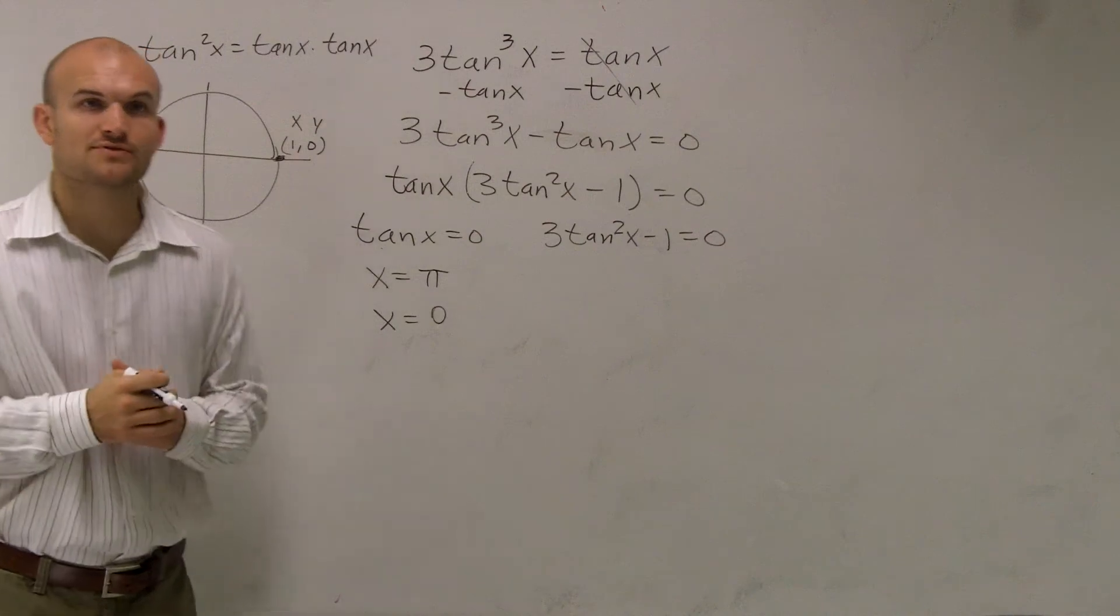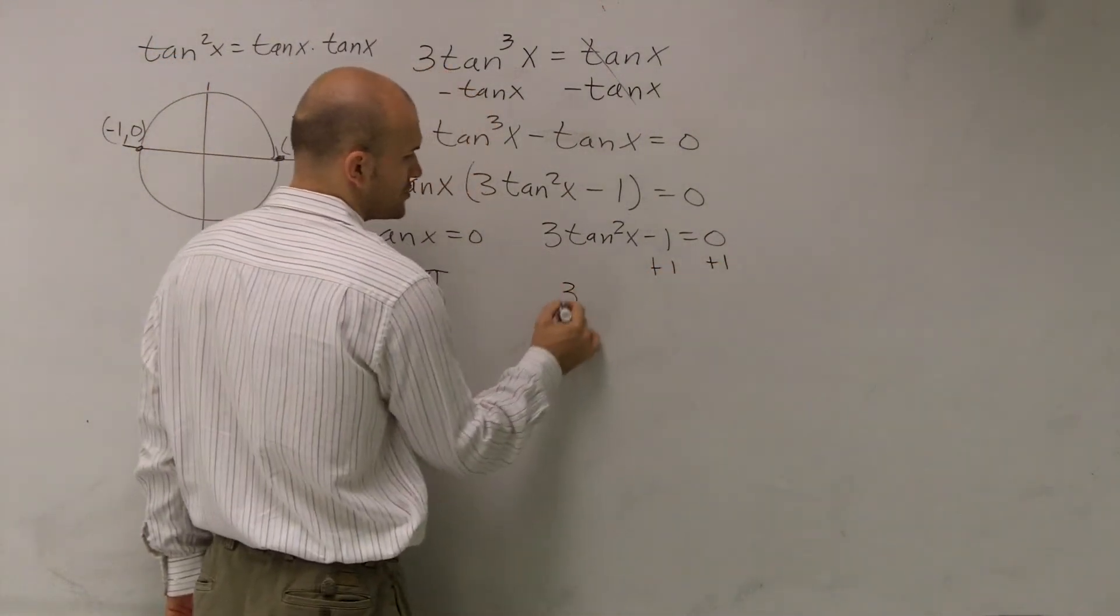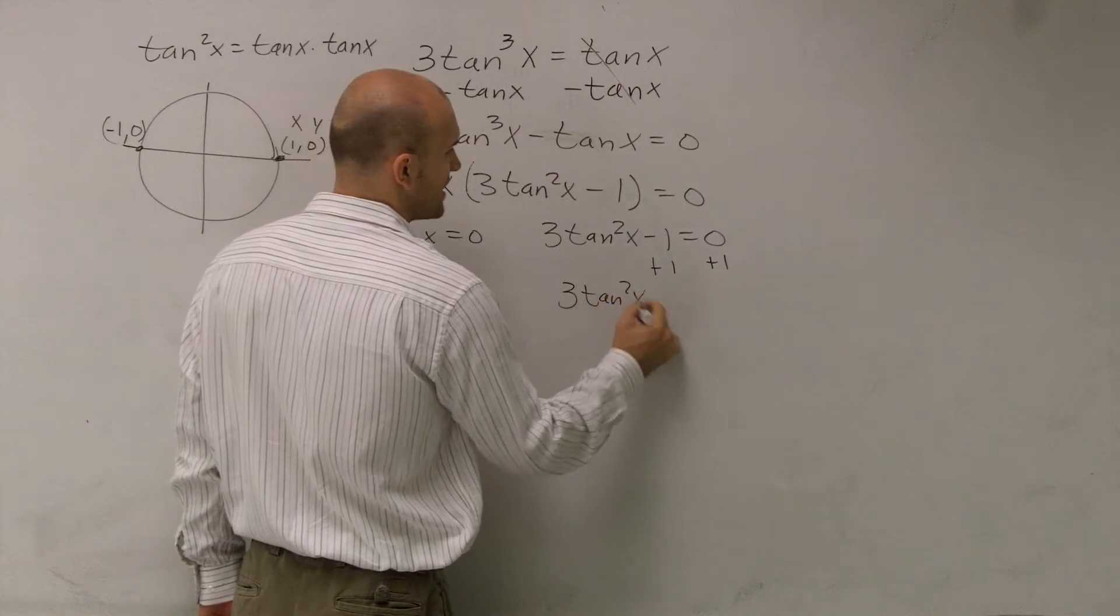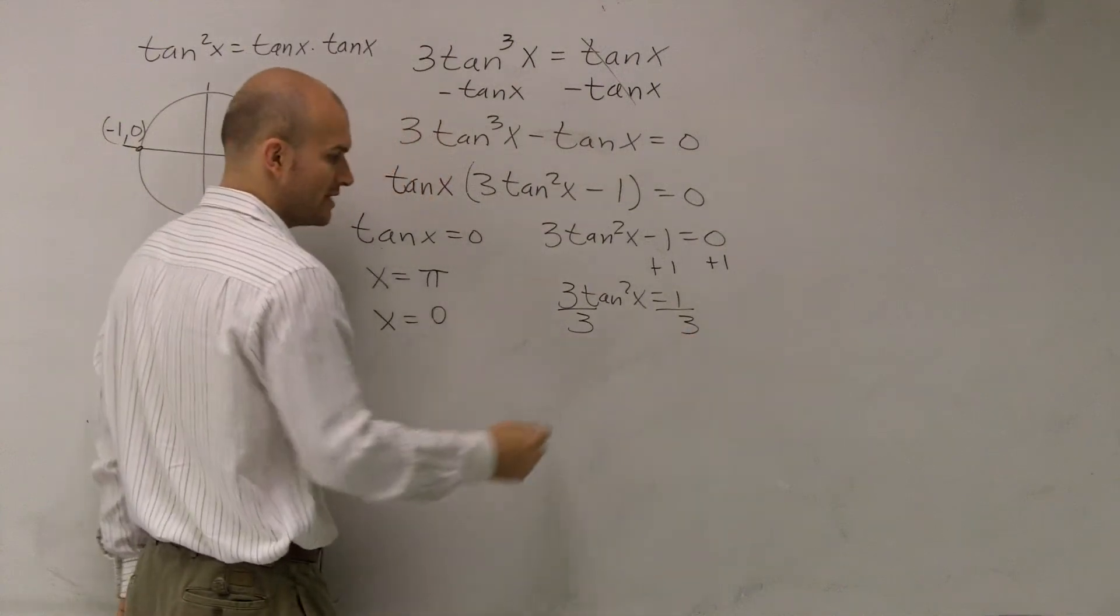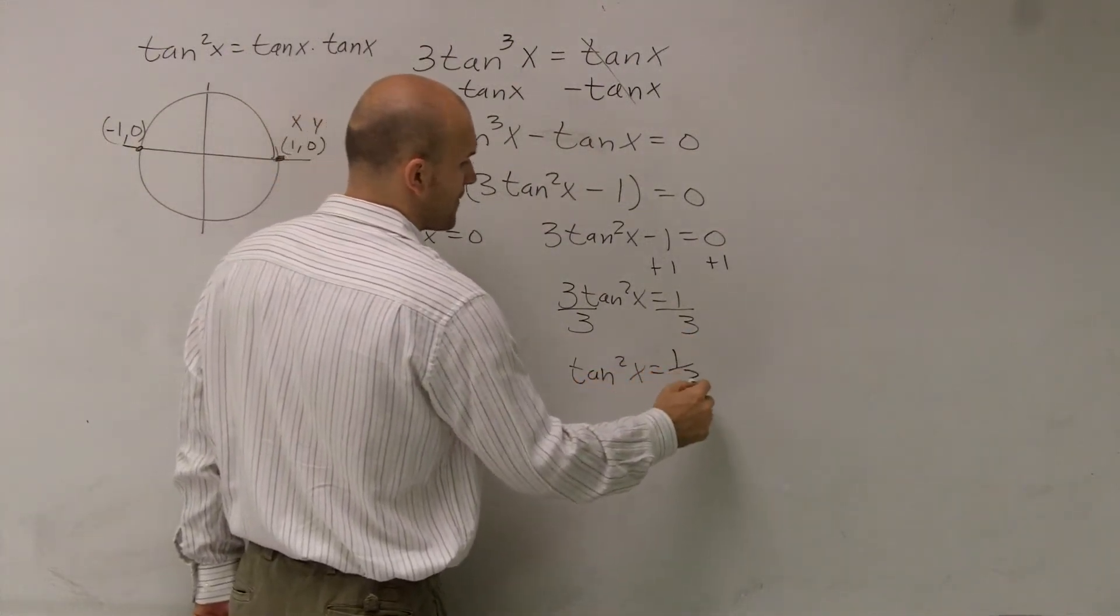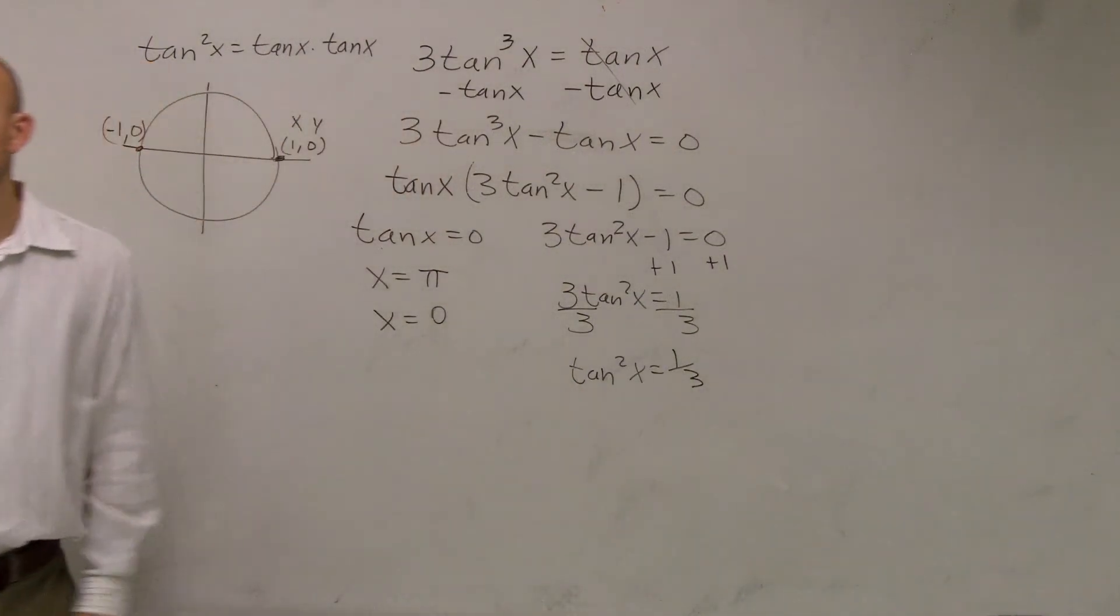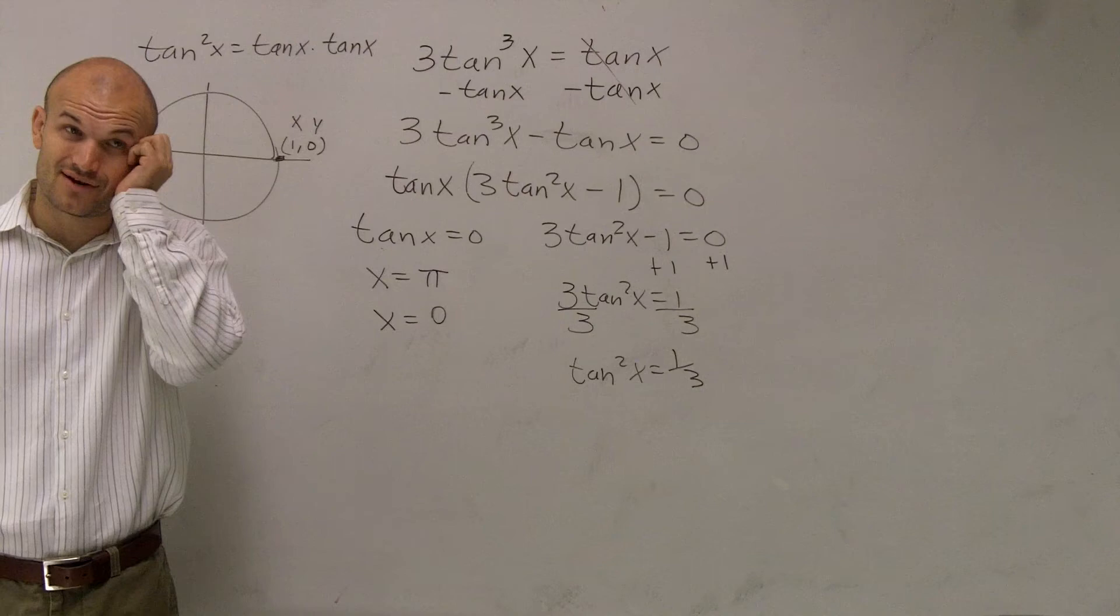So now we've got to go and solve this one. So if I solve this one, I'll add the 1 to the other side. So I have 3 tangent square root of x equals positive 1 divided by 3. I get tangent square root of x equals 1 third. Whew. Got a lot going on, right?